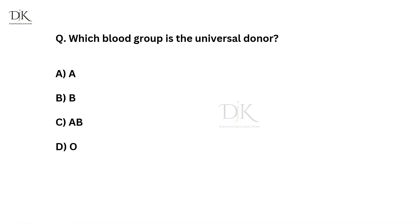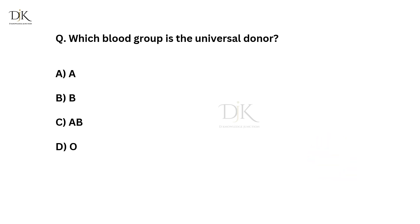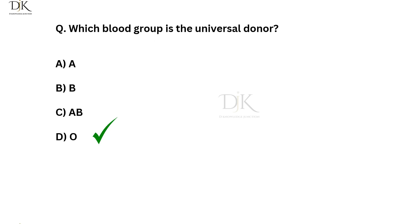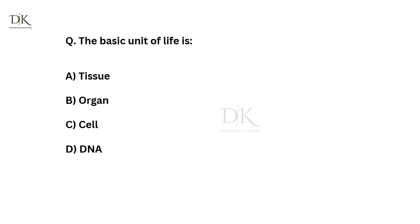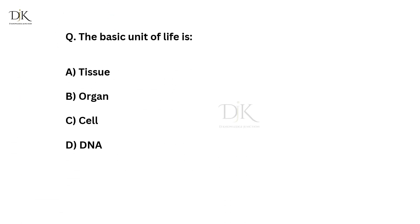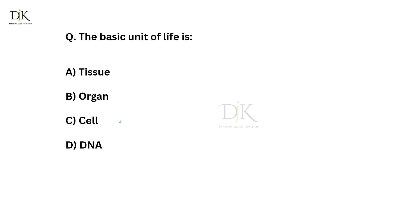Which blood group is the universal donor? The right answer is O. The basic unit of life is? The right answer is cell.